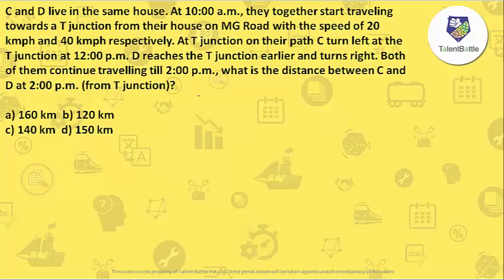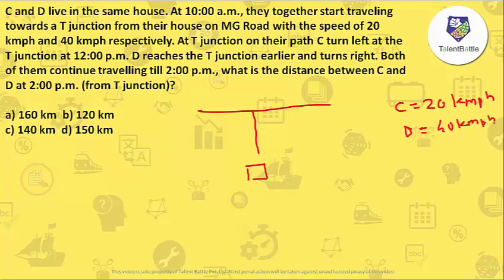This question is based on the time, speed, and distance concept. C and D live in the same house — suppose this is their house. At 10 am they start traveling towards a T-junction. The speed of C is 20 kmph and D is 40 kmph. C reaches the T-junction at 12 pm, meaning after 2 hours. At 20 kmph, C covers 40 km. So the distance between the house and the T-junction is 40 km.